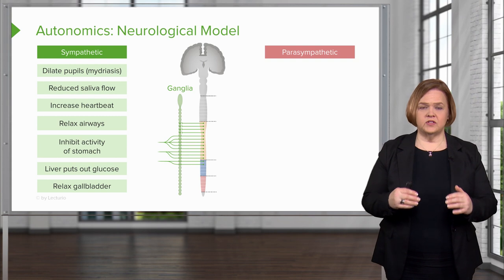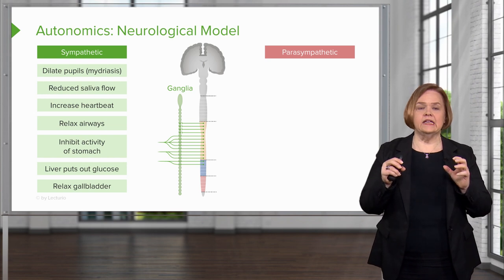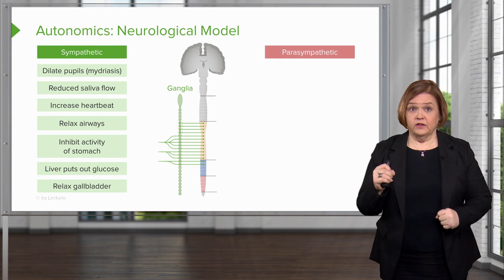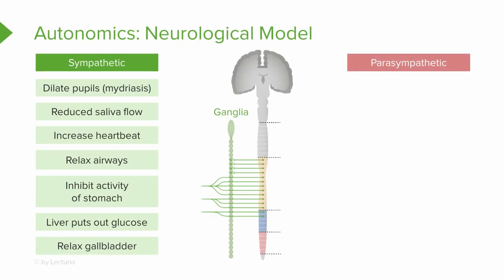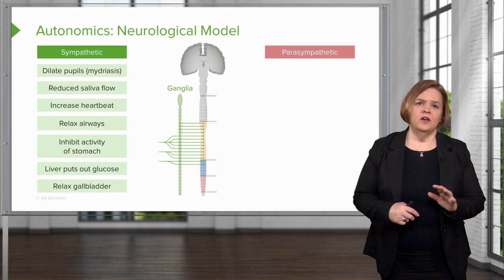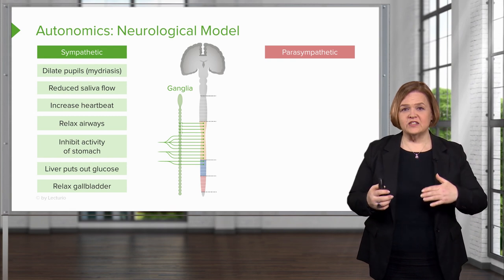When the sympathetic nervous system is stimulated, I'll walk through what happens head to toe. First, the pupils will dilate. Remember, this is fight or flight — I'm really scared and responding to something. My mouth is going to get dry because saliva flow is cut off. My heart rate is going to go up. My airways are going to relax and bronchodilate. My stomach is going to shut down. My liver is going to put out glucose and my gallbladder is also going to relax.